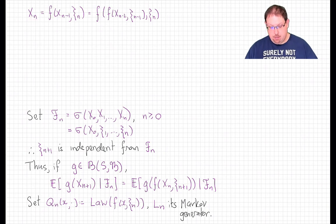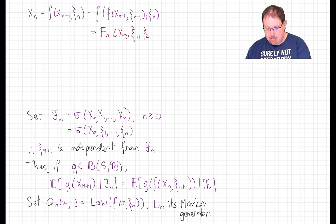X_n is equal to f(X_{n-1}, ξ_n). Now X_{n-1} is f(X_{n-2}, ξ_{n-1}). So if we continue this down the line, what we see is that X_n is some function capital F_n of X0 and ξ_1, ξ_2, up to ξ_n.